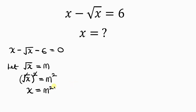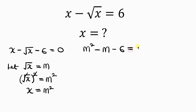So wherever we see x we substitute m squared, and wherever we see the square root of x we substitute m. This expression now becomes m squared minus m minus 6, equal to 0.